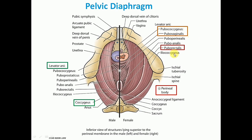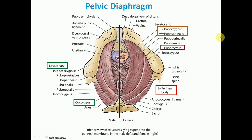Some fibers of pubococcygeous also form a similar sling around the junction of rectum and anal canal, known as puborectalis fibers. The pelvic diaphragm is very important because it supports the pelvic viscera and resists any increase in intra-abdominal pressure. If the pubococcygeous part of levator anae is torn during parturition, support to the vagina is lost and the vagina along with the uterus will sink into the vestibule, causing prolapse of the uterus.